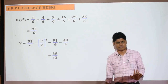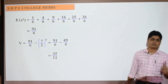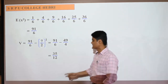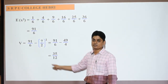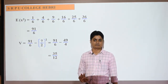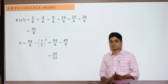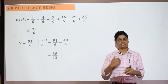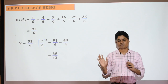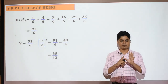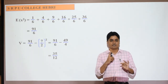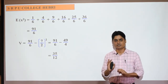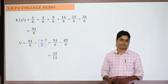So the variance is 35/12. Standard deviation is the square root of the variance. In the next class, we will discuss more problems including those where you find standard deviation and further problems in probability distribution. I hope you understood what is meant by random variable, probability distribution, expectation, variance, and standard deviation. We will continue the remaining part in the next class. Thank you.